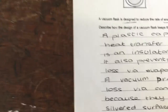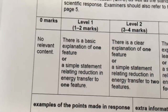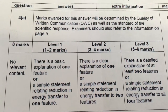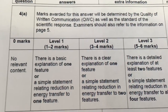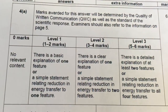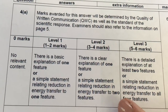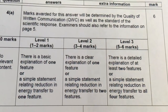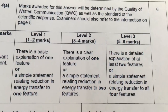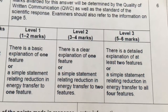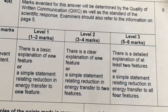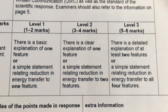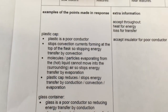Looking at the mark scheme: these questions are banded. Level one (one to two marks) requires a basic explanation of one feature. Three to four marks requires a clear explanation of one feature and a statement relating to two features. Four marks requires a detailed explanation of at least two features — it doesn't need to cover all features. Five to six marks requires simple statements relating to all four features. The sixth mark depends on how well you've written it — your grammar and use of full stops. I would avoid bullet points with questions like these.